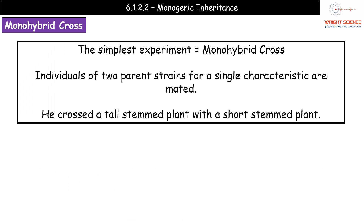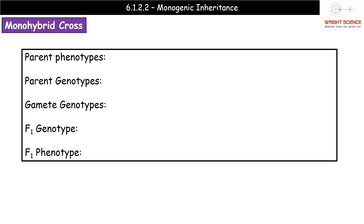What we're going to do is focus on the simplest of his experiments: the monohybrid cross. Mono literally means one, so what we're looking at is individuals of two different parent strains being bred together for a single characteristic. We're going to start with the example of a tall-stemmed plant being bred with a short-stemmed plant. We'll look at this in two different ways — a more lengthy line-by-line set out, and then Punnett squares as well — so you've got two options available to you.